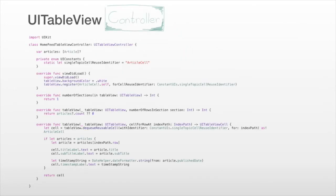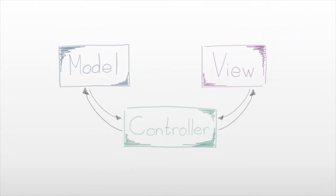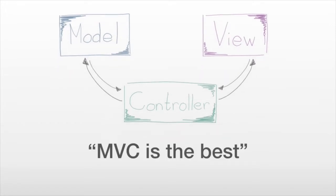This table view controller contains all of our models — an array of articles — and then our basic UI delegate and data source methods: viewDidLoad, numberOfSectionsInTableView, and cellForRowAtIndexPath. At this point we might think we have a great separation between our model, our view, and our controller, and MVC is the best. Let's move on and see what else we need.